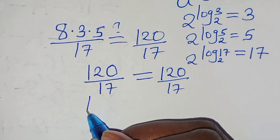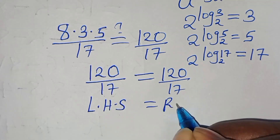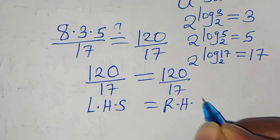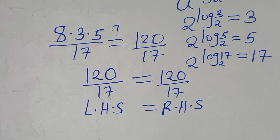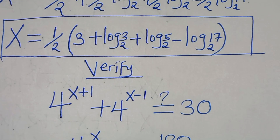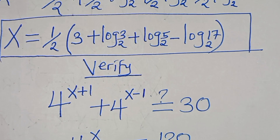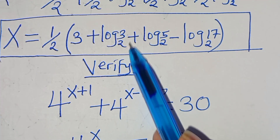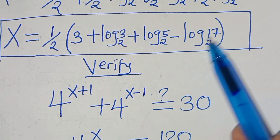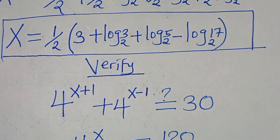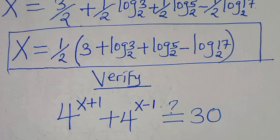This confirms that the left-hand side equals the right-hand side, proving that x equals one half times (3 plus log₂3 plus log₂5 minus log₂17) satisfies the equation.